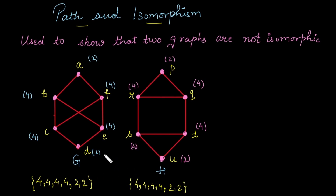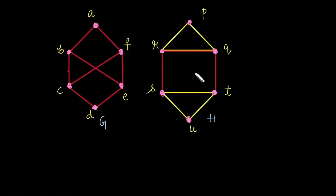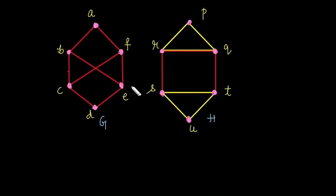Since the degree sequences match, it may be possible there exists a one-to-one mapping between the vertices of graph G and H. But before building the mapping, let's look more closely at these graphs. A simple circuit means a path in which there is no repetition of edges and the endpoints are the same. This can be determined by inspection.